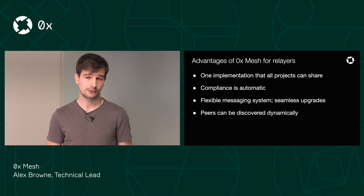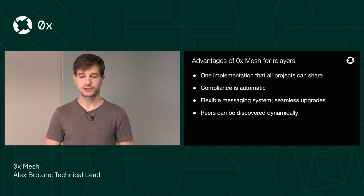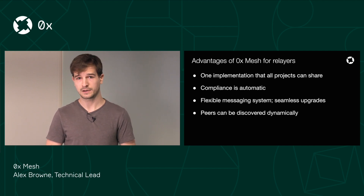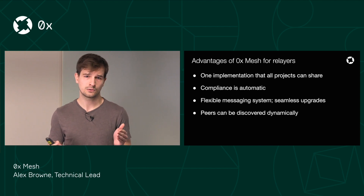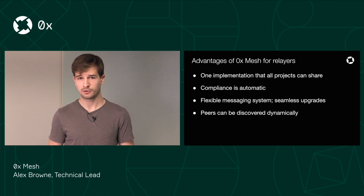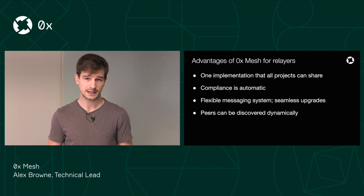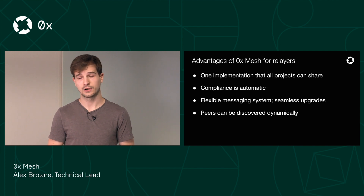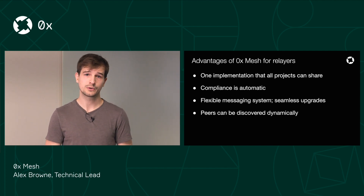Mesh has a lot of advantages for relayers compared to the SRA. 0xMesh runs in a Docker container, and relayers interact with it over a JSON RPC API. In this model, all relayers that run a 0xMesh node are using the same implementation. That means whenever we want to do updates, it's a lot more flexible and it's easier to update. It also means that compliance is guaranteed — since all the relayers are running the same code, we don't have to worry about subtle differences between the API.